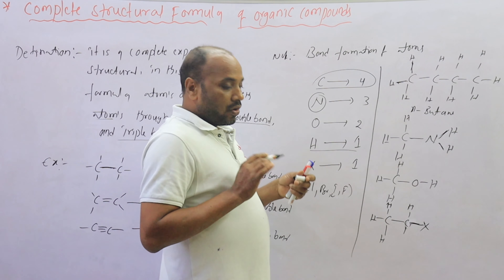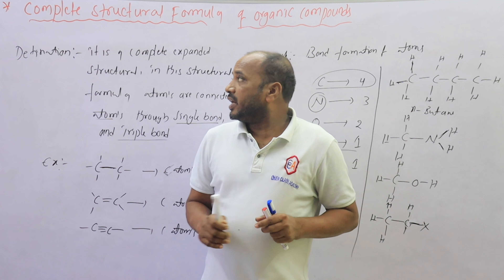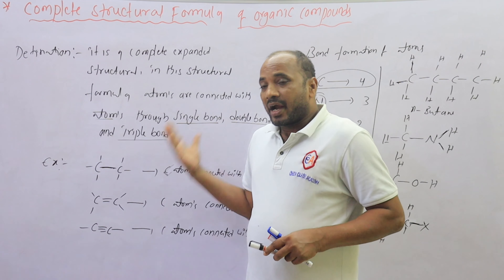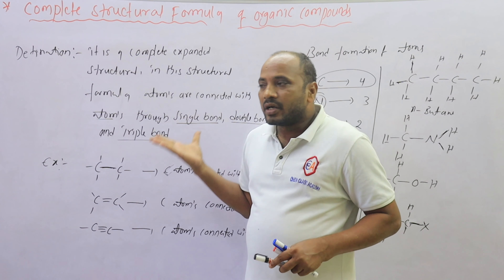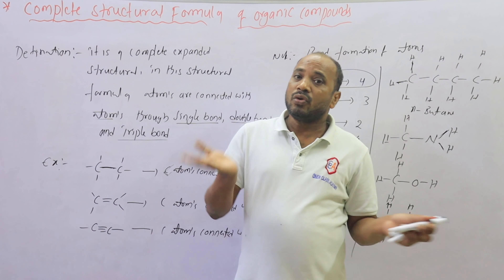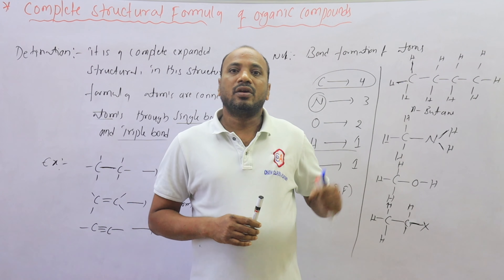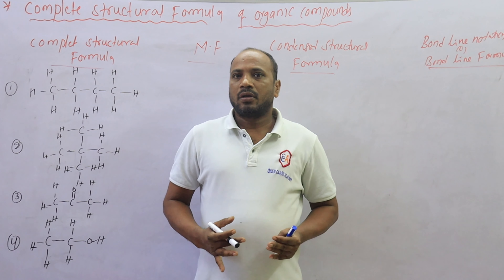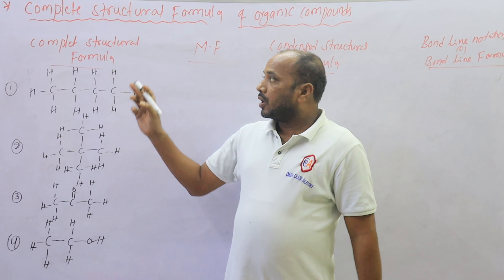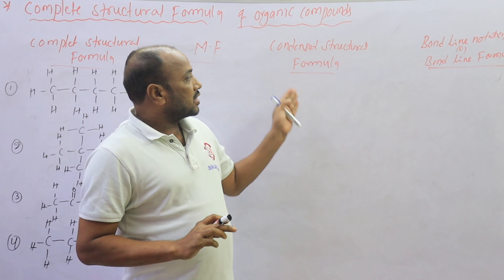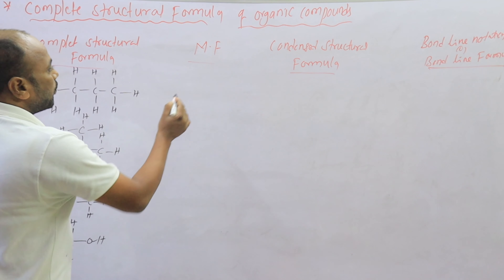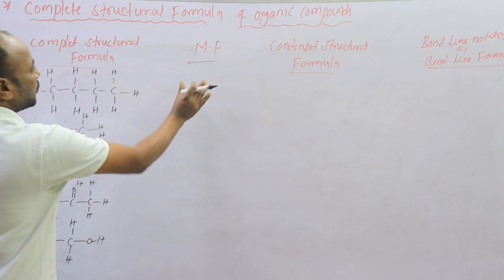This is about the complete structural formula of organic compounds — atoms connected with other atoms through single bond, double bond, and triple bonds. Now I will show the conversion of structural formula to molecular formula, condensed structural formula, and bond line notation.